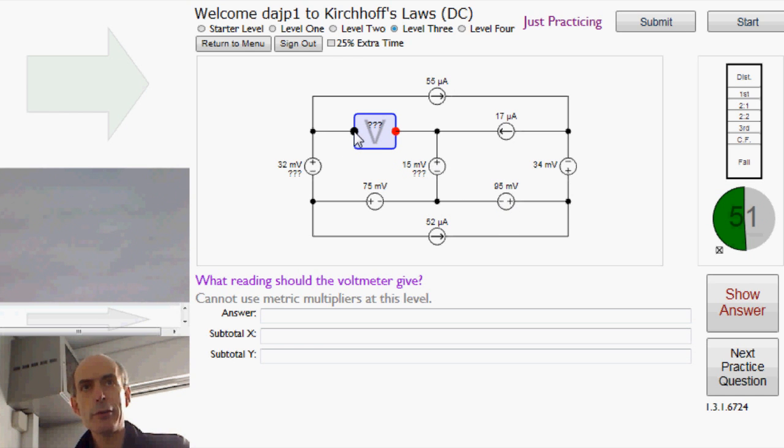So let's try and get from the black terminal to the red terminal only going through voltage sources. First one, this one, 32 millivolts, and we're going down. This one, 75 millivolts, and again we're going down. And then this one, 15 millivolts, and we're going up from the negative to the positive.